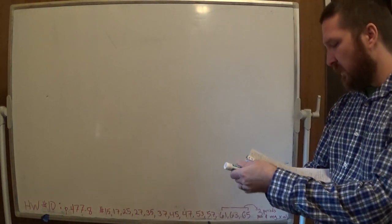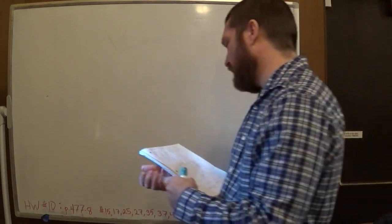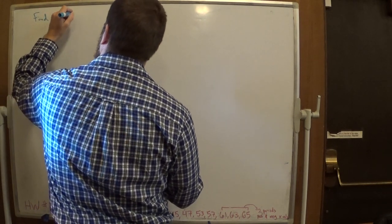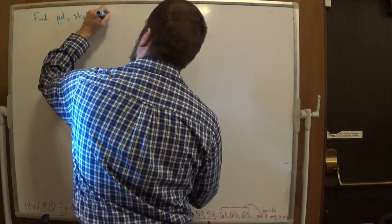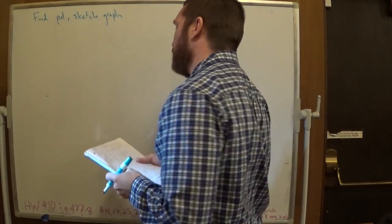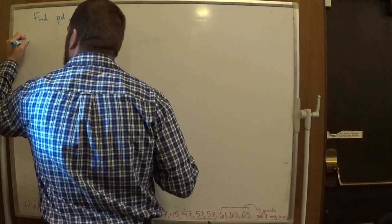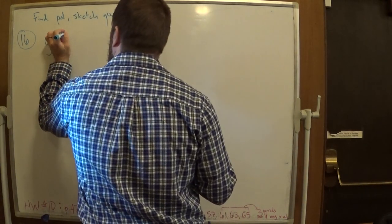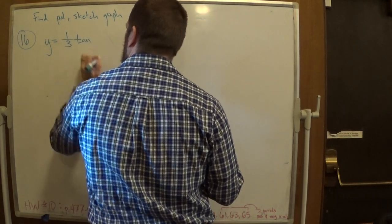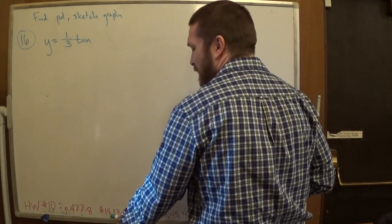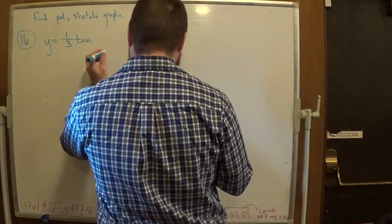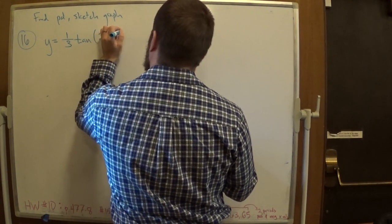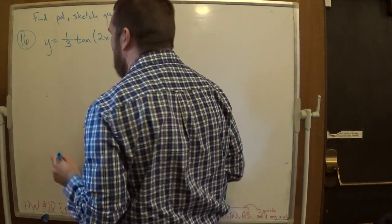From your homework: find the period and sketch the graph showing asymptotes. We're graphing y = (1/3)tan(2x - π/4) — this is number 16. Today's going to be very much like what we've been doing. It's exactly the same method. Last time if it said sine, the first thing we'd do is see what's happened to the input.